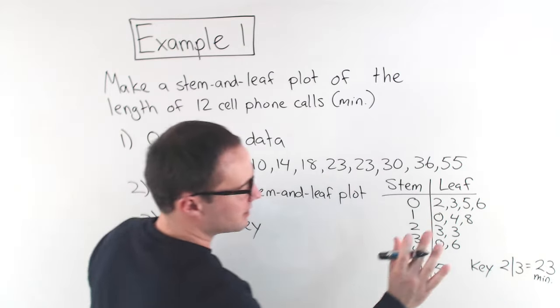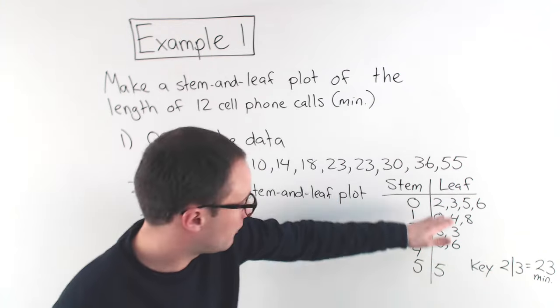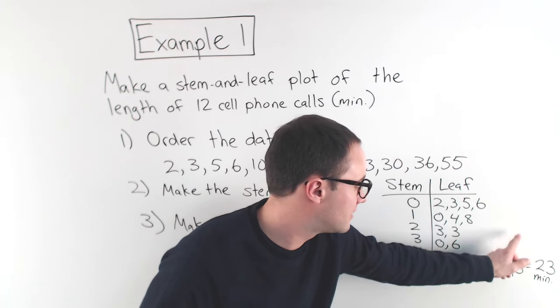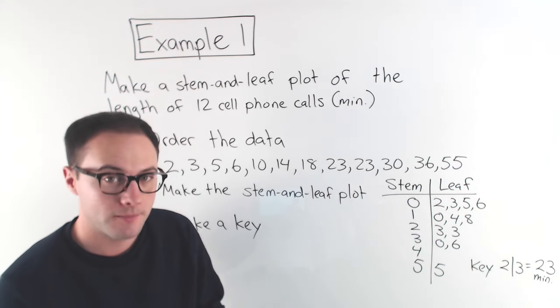So, the key: a stem of 2 and a leaf of 3, that means 23. I guess I should put minutes too. 23 minutes. Okay? So, that's my key. You can box it if you want or you don't need to. But, the whole point is give an example from your data, so that we know exactly what the stem represents and the leaf as well. Good. Here's one to try on your own.